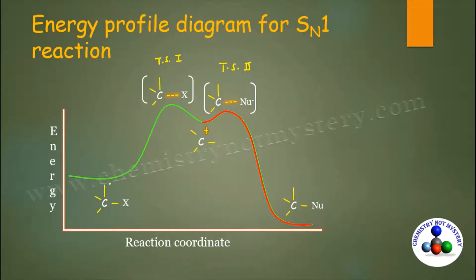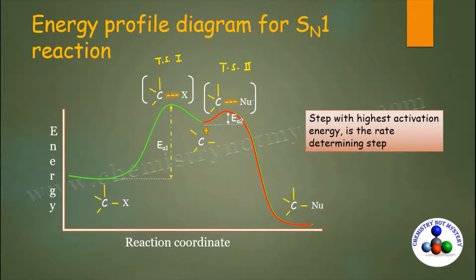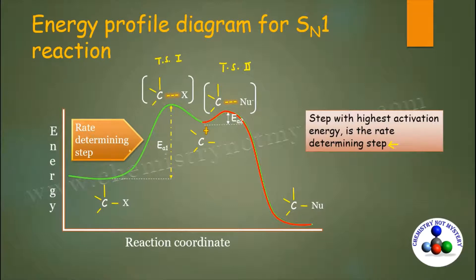The energy difference between the reactant and the transition state represents the activation energy. EA1 is the activation energy for the first step and EA2 is the activation energy for the second step. The step with the highest activation energy is the rate-determining step. Here EA1 is greater than EA2, so the first step is the rate-determining step for SN1 reaction.